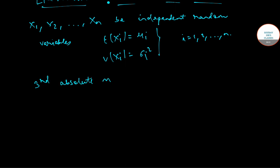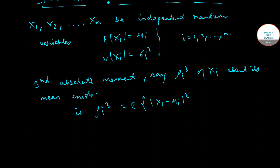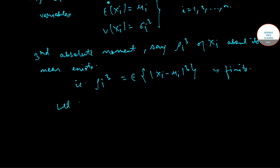Let us suppose that the third absolute moment, say rho i cube of xi about its mean, exists. That is, rho i cube equals expectation of mod xi minus mui cube is finite.